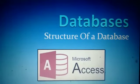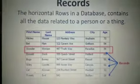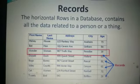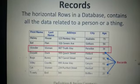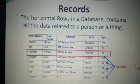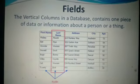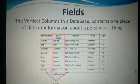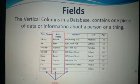Today I am going to give you a lecture related to the structure of a database. A database table consists of records, which are the horizontal rows in a database table. One record contains complete information about one person or one thing. Fields are the vertical columns in a database table. One field contains one type of information about all records.